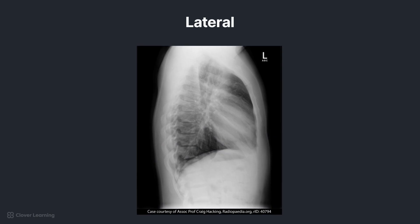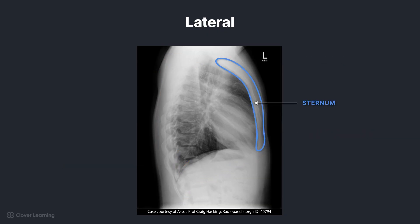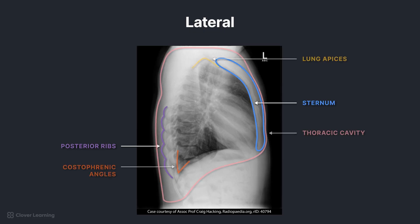For the lateral projection, the patient should be upright with their left side against the IR. Again, the entire thoracic cavity should be included with the lungs visible from the apices through the costophrenic angles, the sternum included anteriorly, and the posterior ribs included posteriorly to ensure all relevant anatomy is demonstrated. It is important to note that posterior costophrenic angles are slightly inferior to the anterior angles. This is a key point to remember when moving from a PA to lateral position.